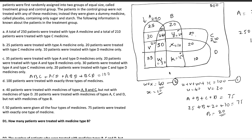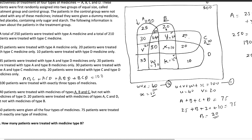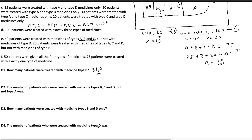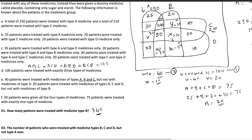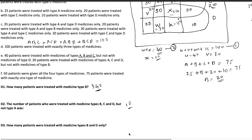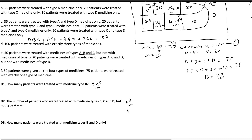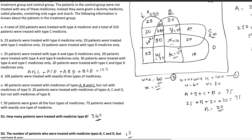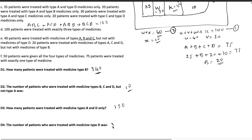Question D1: How many patients were treated with medicine type B? Adding all B-partition values: 160, 200, 260, 300, 340 — the answer is 340. Question D2: Patients treated with B, C, and D but not A — that is X = 10. Question D3: Patients treated with B and D only — that is K = 150. Question D4: Total patients treated with medicine type D — summing all D-partition values: 10 + 20 + 50 + 30 + 35 + 20 + 150 + 10 = 325. Stay safe and see you in the next video.